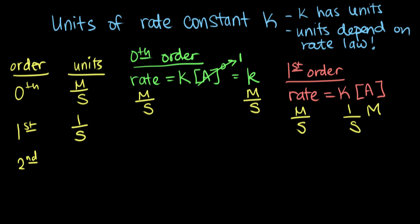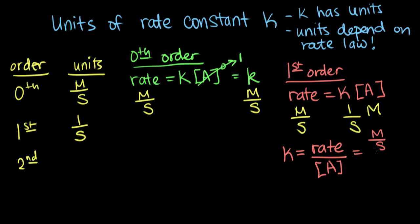Another way to find the units, if you're not comfortable back-calculating, is to rearrange the rate law. Putting k on one side, we get k equals rate divided by the concentration of A. Since the units on both sides of the equal sign must match, we divide the units of rate by the units of concentration: molar per second divided by molar. The molar cancels, and we're left with 1 over seconds — a more straightforward approach, but the same idea.